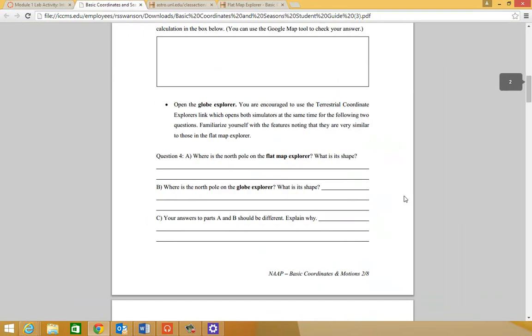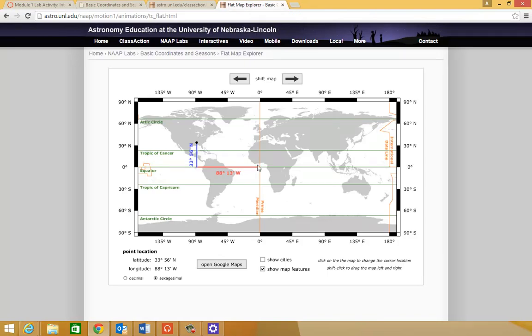Question four, they want us to play around with what's called the globe explorer. Now that we know what latitude and longitude look like on a flat map, let's play around with a sphere.